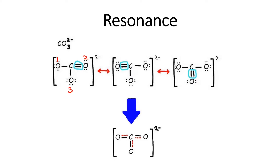In the first structure, carbon has a double bond with oxygen number 2. But it is also possible for carbon to have a double bond with the other two oxygens. So in the second structure, carbon has a double bond with oxygen number 1, and in the third structure, carbon has a double bond with oxygen number 3. In the real world, all three oxygen atoms are the same, so these three structures are called equivalent structures.